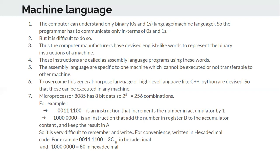To overcome this, they developed higher-level languages. Higher-level language is nothing but C, C++, Python, etc. You write English-like statements — for example, for loops, while loops — which in turn will be converted into the respective machine language.